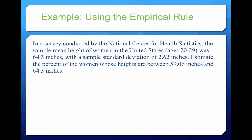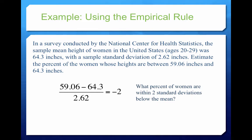In a survey conducted by the National Center for Health Statistics, the sample mean height of women in the U.S. ages 20 to 29 was 64.3 inches — roughly 5'4". I'm going to take our data value of 59.06, subtract it from the mean of 64.3, and divide by our sample standard deviation. This gives me negative two — meaning I'm looking for the percent of women that are within two standard deviations below the mean.